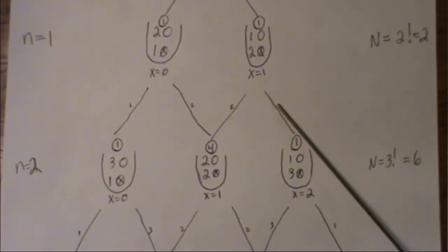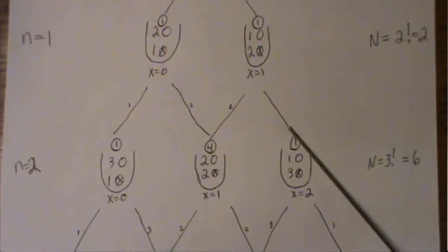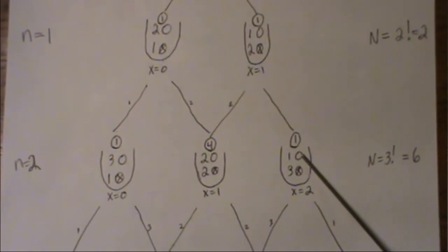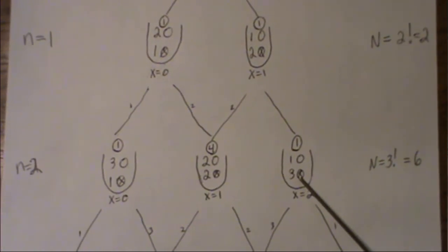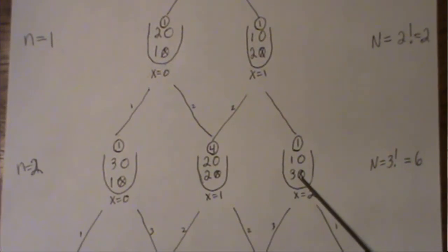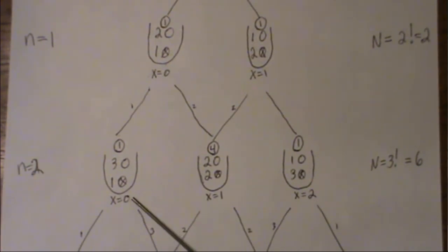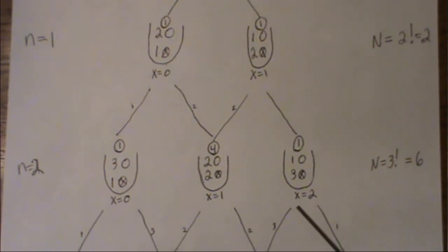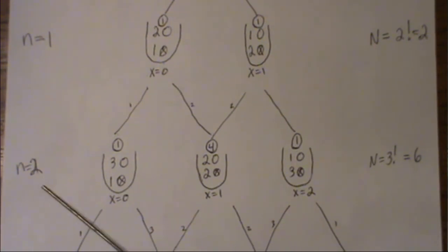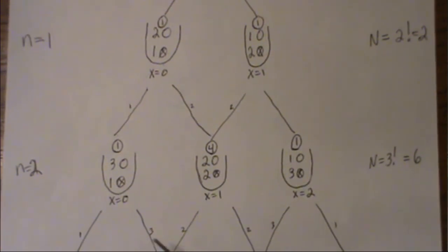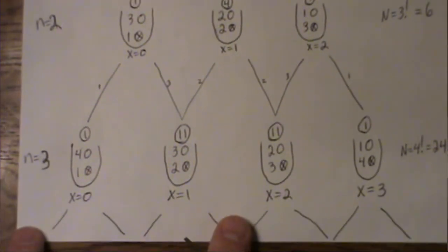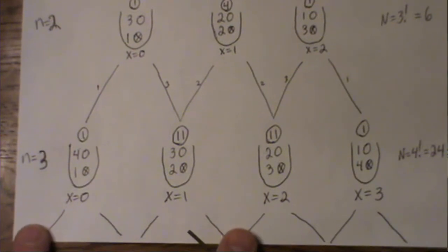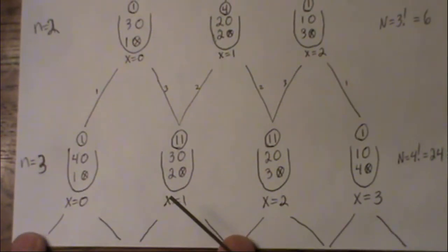If we draw a white ball, we put it back and put one of the opposite color in, so X equals zero, one, or two are the only possibilities after N equals 2.